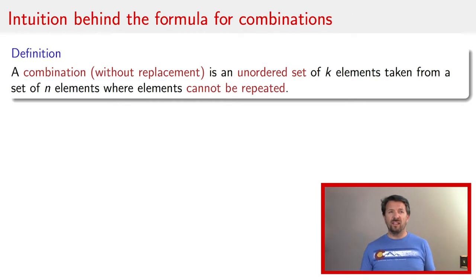So if you think of this, really a combination without replacement is a permutation without replacement except without the ordering. And so our approach for this particular formula to understand the intuition is going to be to take that formula for permutations without replacement and to remove or to divide by the different ways that there are to order those elements.